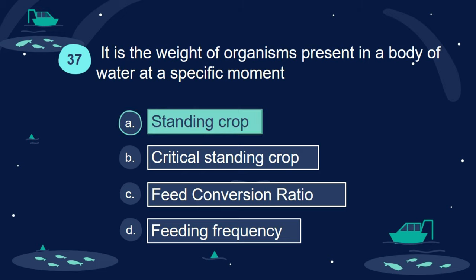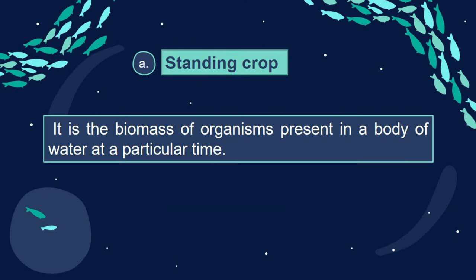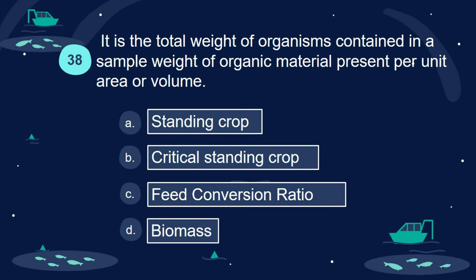Answer: A. Standing crop. Standing crop is the biomass of organisms present in a body of water at a particular time.